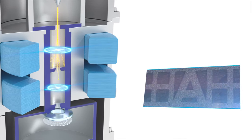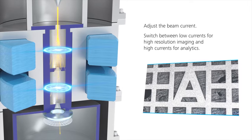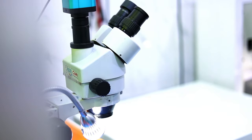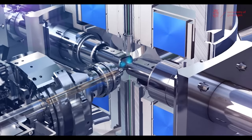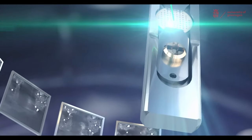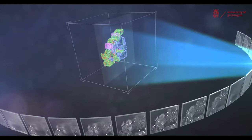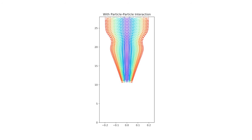These electrons need to be accelerated and focused — focused exactly the way you focus light in a lens or a conventional optical microscope. Only in this case it won't be possible to use glass lenses, because the entire electron beam will be absorbed by the first lens. To do this, you need to use electrostatic lenses — specially shaped electrodes that create a certain electromagnetic field — which makes it possible to focus the beam of electrons and also accelerate them to high energies.